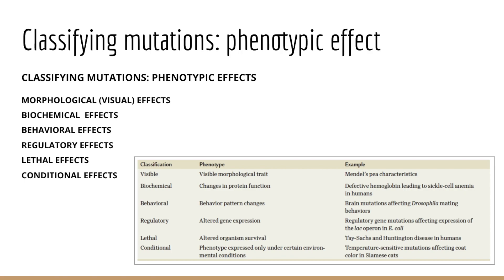Biochemical effects involve a mutation impacting the ability to carry out a specific biochemical pathway — the textbook uses sickle cell anemia as an example. Behavioral effects include conditions like addiction and personality disorders, which we considered in an earlier module on behavioral genetics. Regulatory effects involve an alteration in gene expression — like the lac operon in E. coli from Module 8. Lethal effects involve the inheritance of a genotype not compatible with life or that causes premature death, with examples including Tay-Sachs, lethal around age 3, and Huntington disease, lethal in one's 30s and 40s.